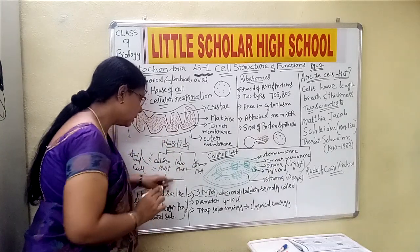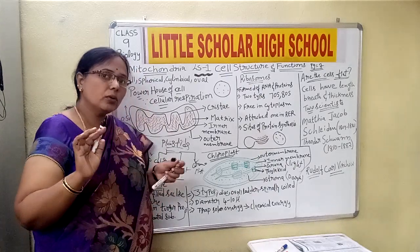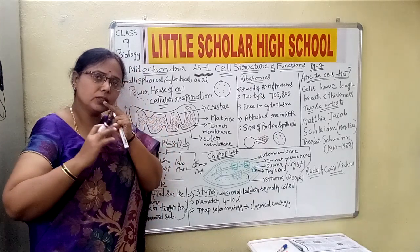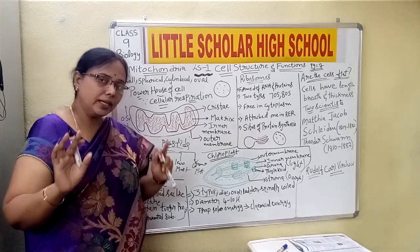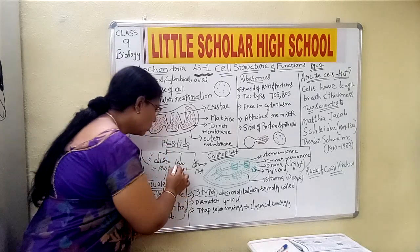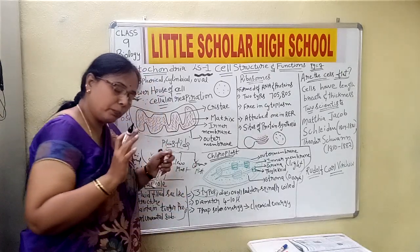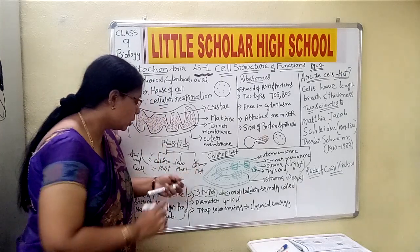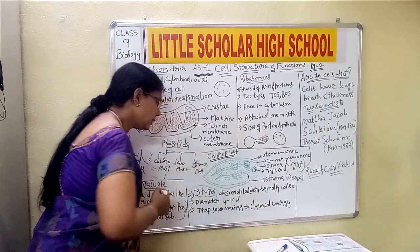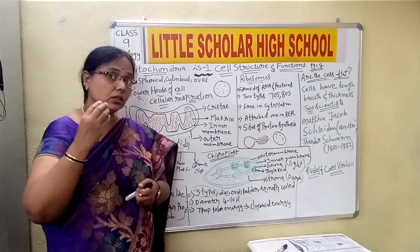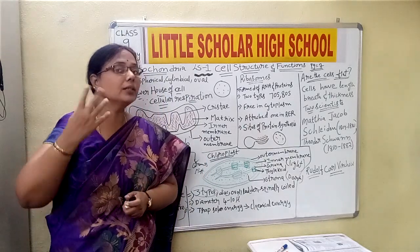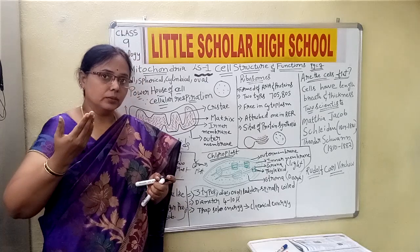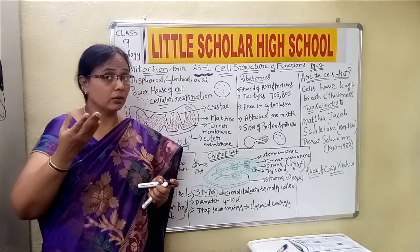Leucoplasts are the plastids which do not have any specific color — they are pale or white in color. Chromoplasts are the ones which have certain colored pigments, like orange or yellow.